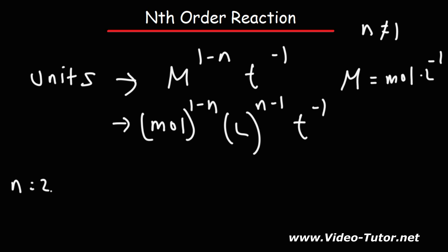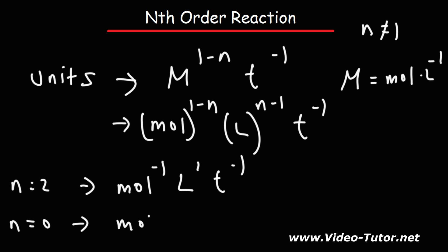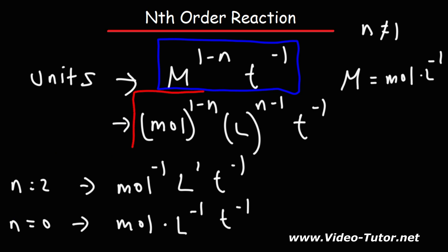There's also another variant of this formula. Since molarity equals moles over liters, you can write it as moles to the first power times liters to the negative 1. In terms of moles and liters, the formula becomes moles to the (1 minus n) times liters to the (n minus 1) times t to the minus 1. For a second-order reaction, this is moles to the negative 1 times liters to the positive 1 times t to the minus 1. For a zero-order reaction, it's moles to the first power times liters to the negative 1 times t to the negative 1. You may see this form of the units on a test.